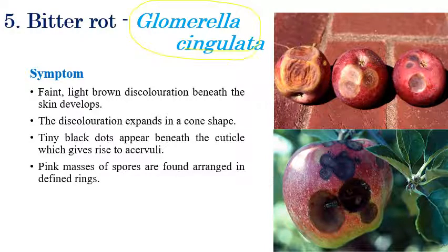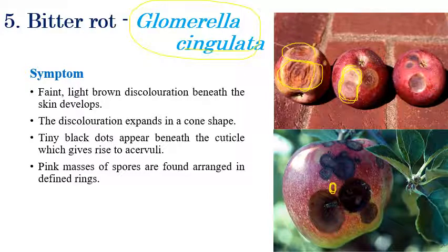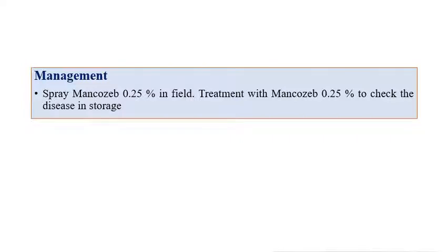The fifth disease is bitter rot, caused by Glomerella cingulata. Initially, small black depressed spots appear on the fruit skin. These expand into larger depressed spots with slight white growth in the depressed areas. Under magnification, acervuli can be observed along with a pinkish mass of spores exuding from the depressed regions.